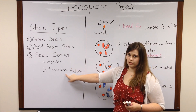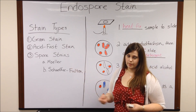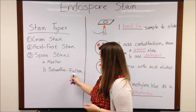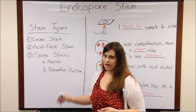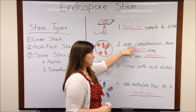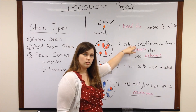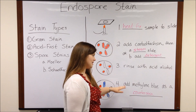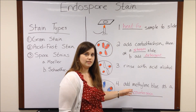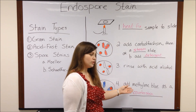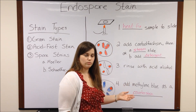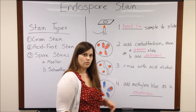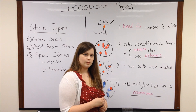The Schaefer-Fulton spore stain is very similar — it just exchanges some stains for others. For example, in the Schaefer-Fulton method, instead of using carbofuchsin, you use malachite green, which stains the endospores green. As a counterstain, you can use safranin instead of methylene blue. Safranin will stain all of the vegetative cells pink. So it's just a different way of visualizing endospores.